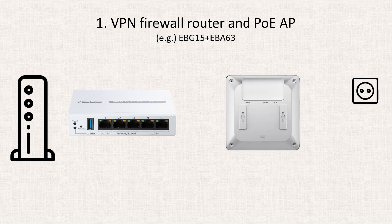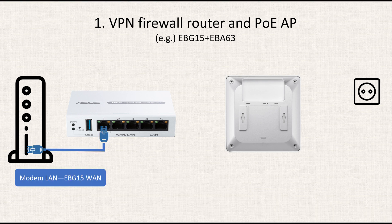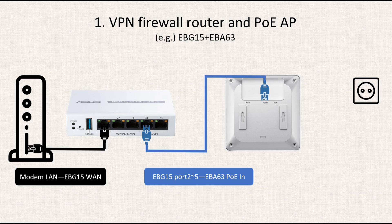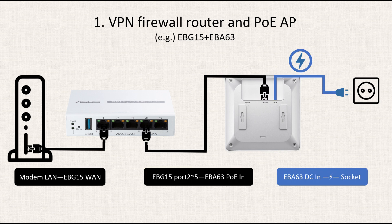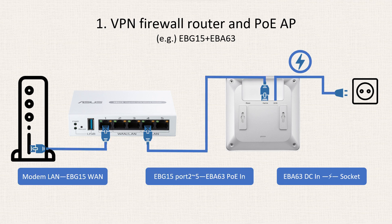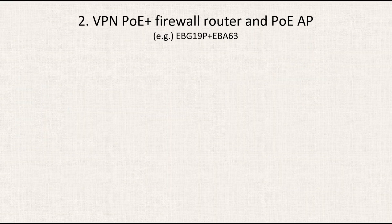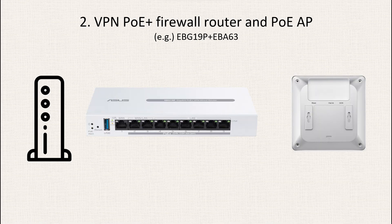Taking EBG15 and EBA63 as examples. First, create a connection by linking the LAN port of the modem to the WAN port of EBG15. Second, establish a connection by linking either ports 2 to 5 of EBG15 to the PoE input of EBA63. Third, ensure power supply to EBA63 by connecting its DC input to an electrical socket. The setup will be completed.